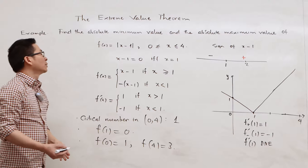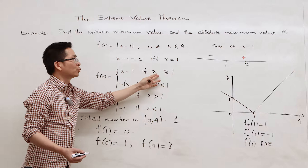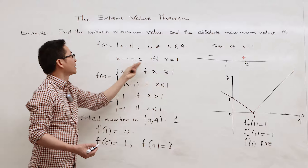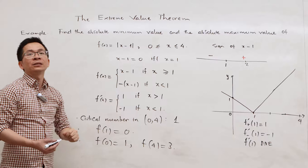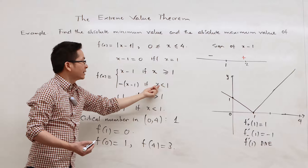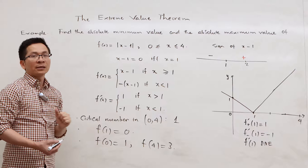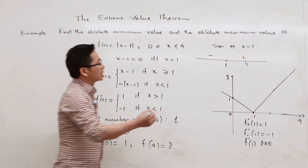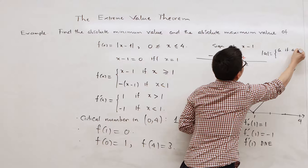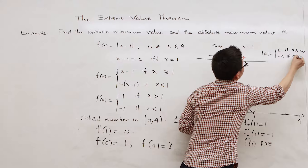So the function f can be rewritten as a piecewise function: f(x) = x minus 1 if x is greater than or equal to 1, because whenever x is greater than or equal to 1, x minus 1 is greater than or equal to 0. And f(x) = -(x minus 1) if x is less than 1, because x minus 1 is less than 0 there. Recall that the absolute value of a is a if a ≥ 0, and -a if a < 0.